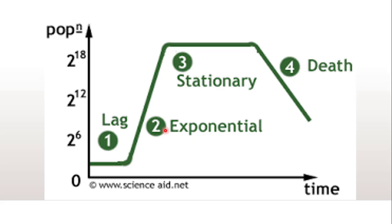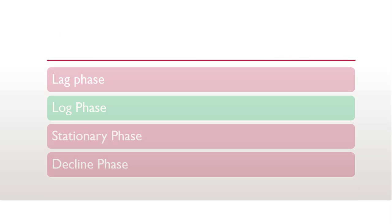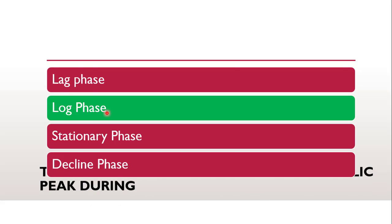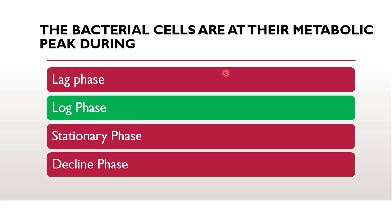Then in log phase, which is also known as exponential phase, it is at the maximum peak — performing various activities and various metabolic functions. At stationary phase the growth is stagnant, and at the death or decline phase it is declining. In exponential phase, cell doubling occurs and balanced increase is there. So the correct answer is log phase — the metabolic activities are at peak during the log phase.